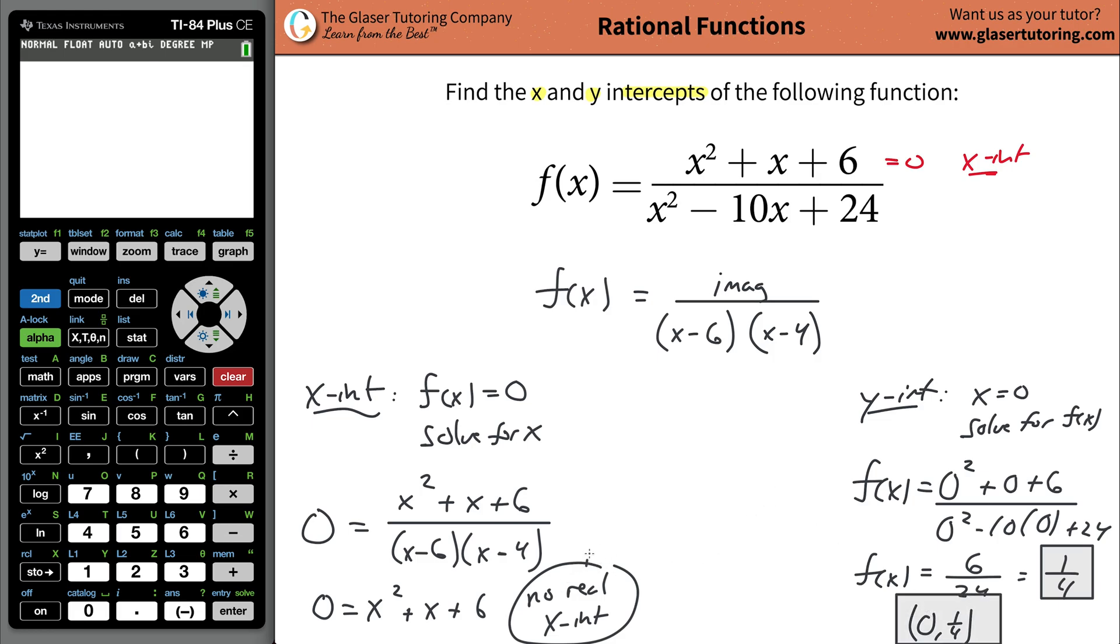Let's see if what we concluded is true. Go to your calculator and plug in the function: x squared plus x plus six, divided by x squared minus 10x plus 24, and hit graph. It's tough to really tell, but let's zoom in a little bit. Let's go to zoom two.